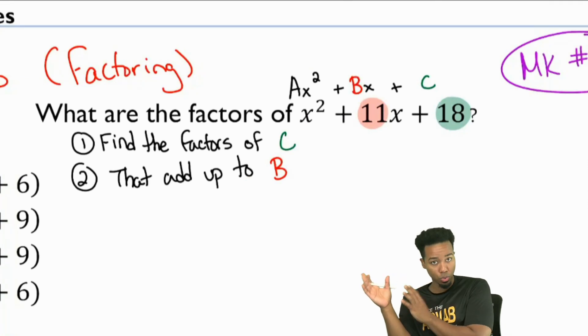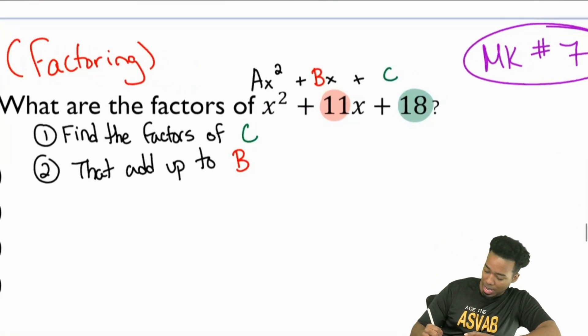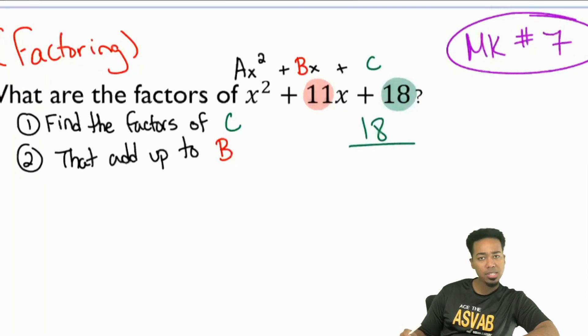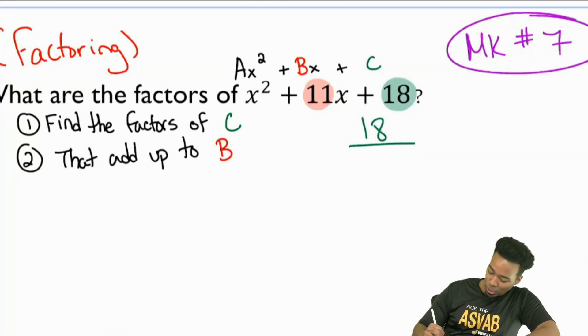That's basically it. Find the factors of C, the 18, that add up to B, which is 11. That's straight up how this works when it comes to factoring trinomials. So let me just show you right here. Everybody, let's list out all of the factor pairs of 18. What two numbers can you multiply together to get 18?